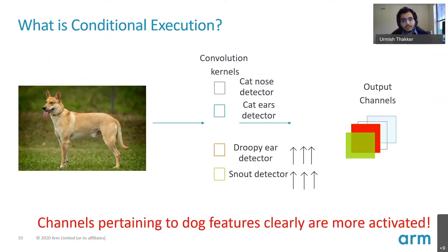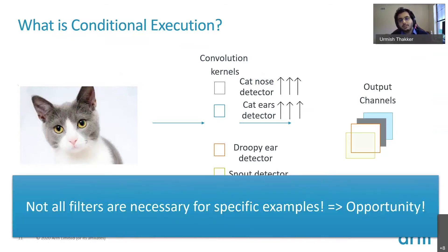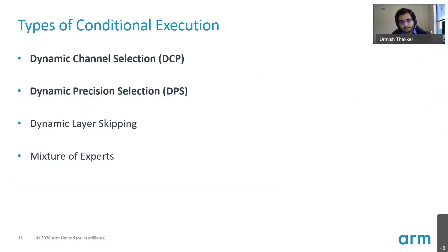Let's look at an example of one specific type of conditional execution technique. Suppose you have an object recognition network trained for detecting cats versus dogs. This network would have CNN filters specialized for cat features and filters specialized for dog features. When we pass a dog image through it, output channels corresponding to dog-feature filters get activated and everything else has a value of zero or very low. When we pass a cat image through, cat-feature channels activate and everything else is zero. So the question becomes: why do we even execute the parts of the network that are going to have low or zero activation values? Conditional computation technologies exploit such opportunities to create efficient inference networks.